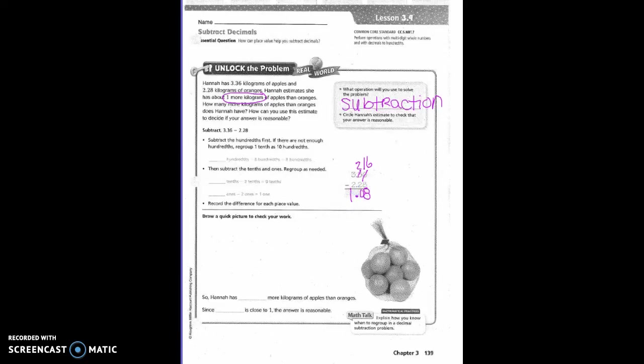So 16 hundredths minus 8 hundredths gives us 8 hundredths. And then we had 2 tenths minus 2 tenths equals 0. Then 3 ones minus 2 ones equals 1.